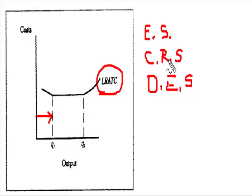Constant returns to scale are achieved when long-run average total costs have flattened out. So that's actually between this output level up to Q2.